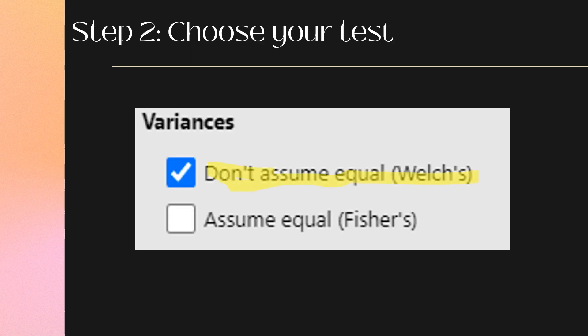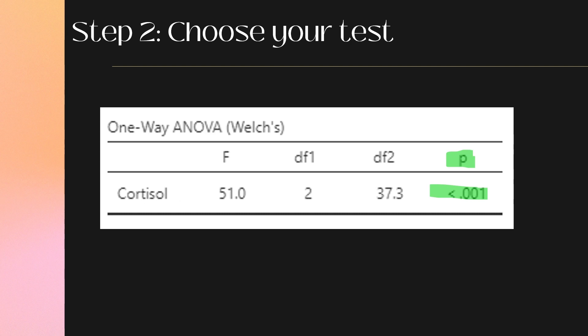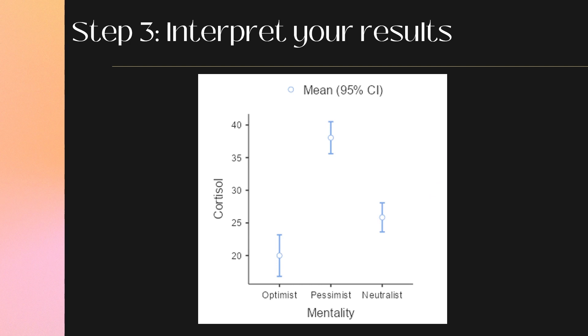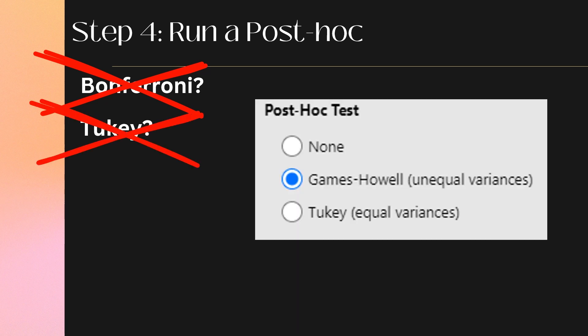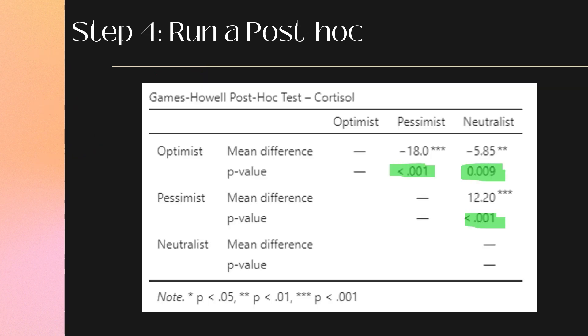Step 2: Run the Welch test. There's our p-value — it's significant. Step 3: Interpret the results. All we can say at this moment is that there is a difference between our groups, but who is handling the stress better? We don't know — not until we run our post-hoc test. Step 4: Post-hoc. Because we didn't run a standard ANOVA, we cannot use the Bonferroni or the Tukey post-hoc test. We have to use a post-hoc test called the Games-Howell post-hoc test. We turn it on and we can see where our differences are occurring.